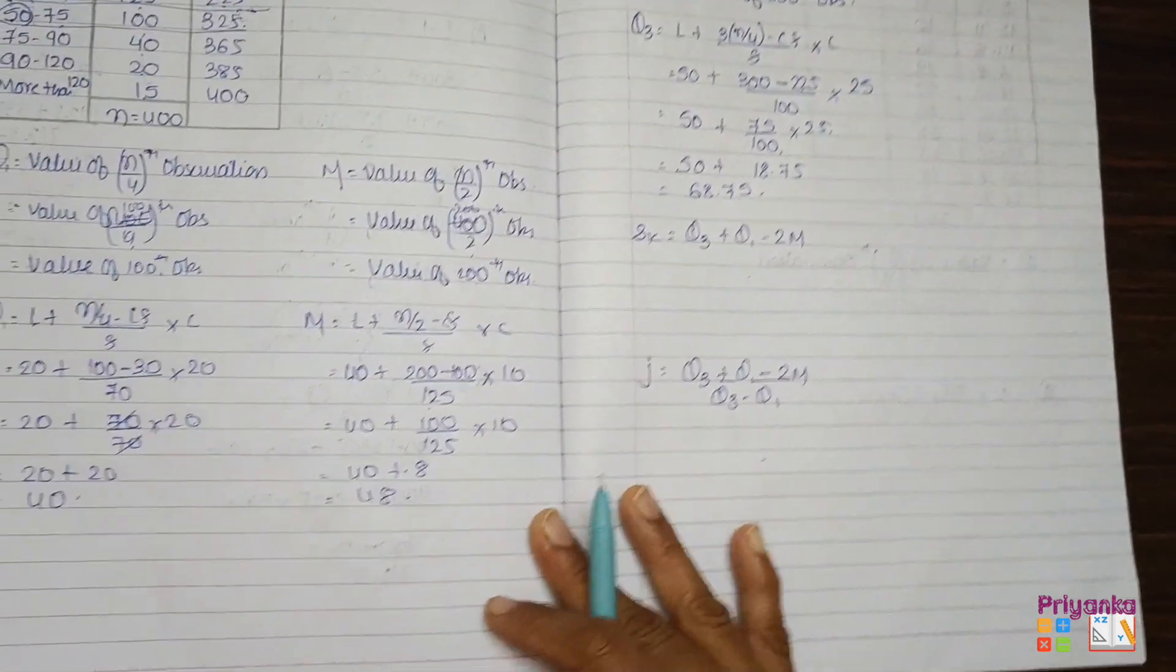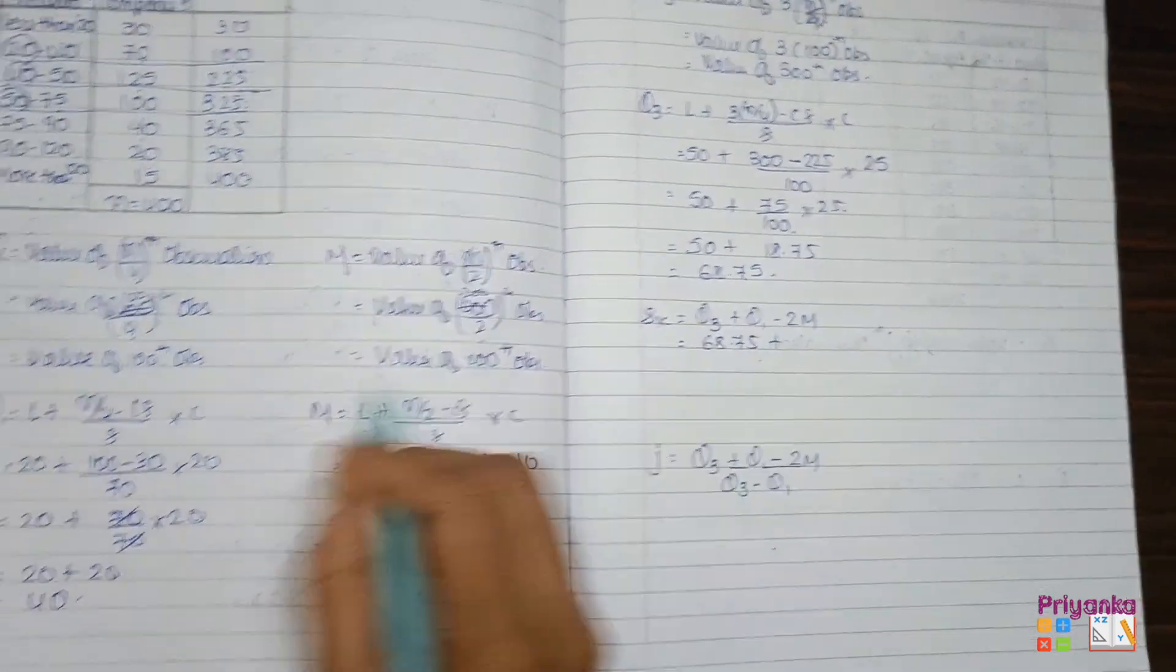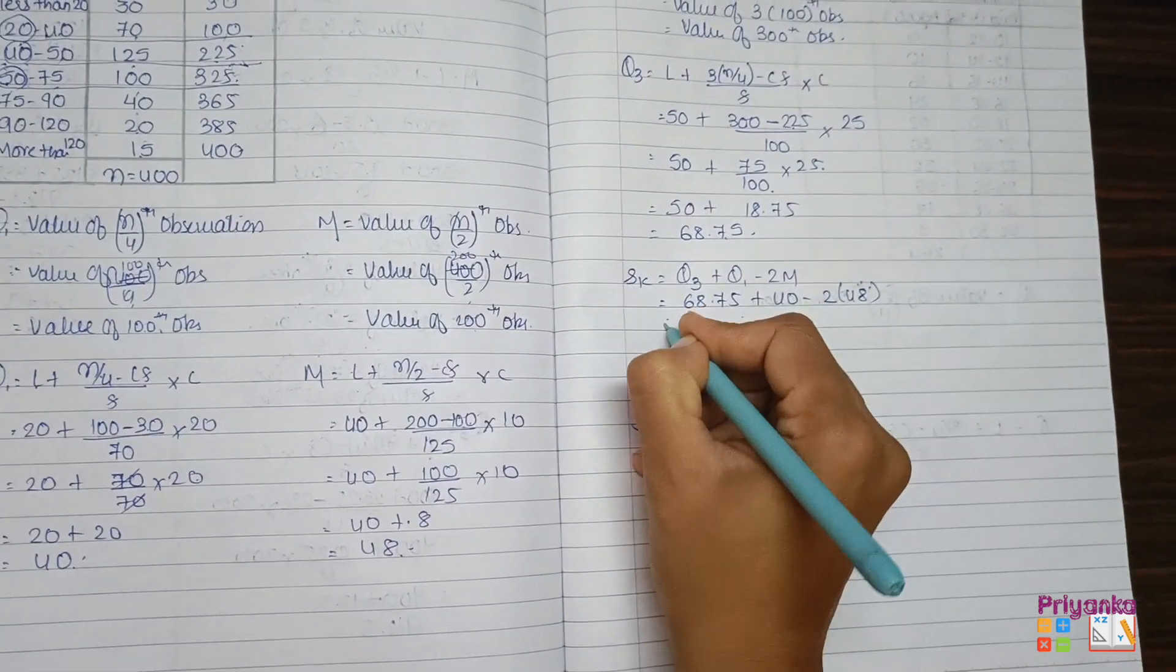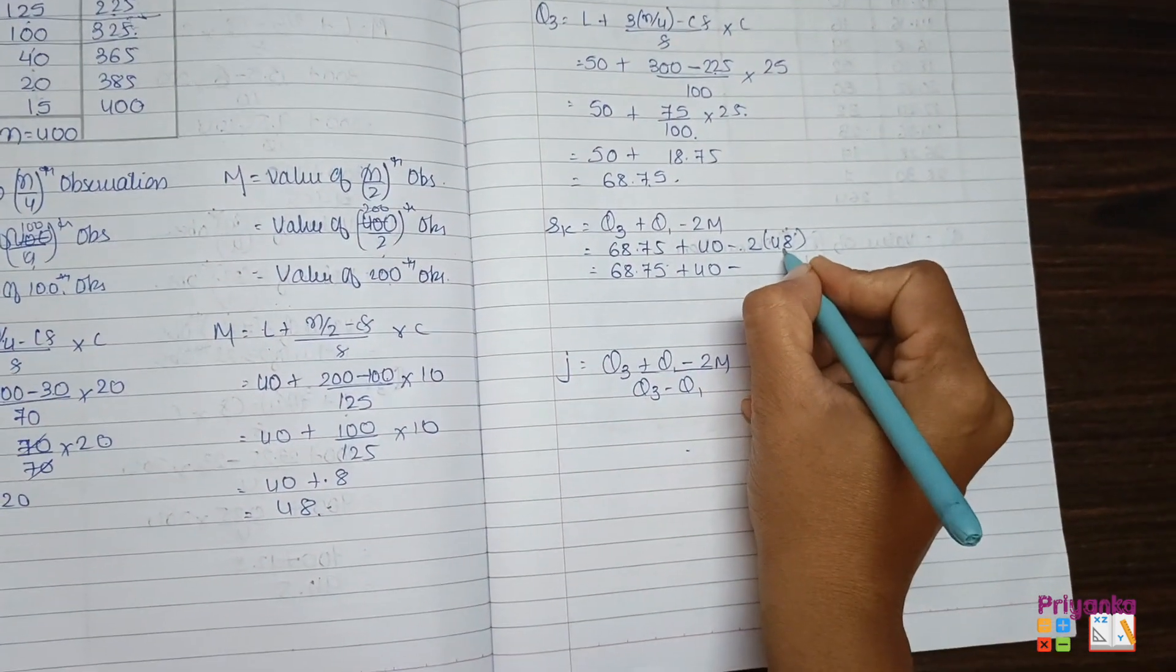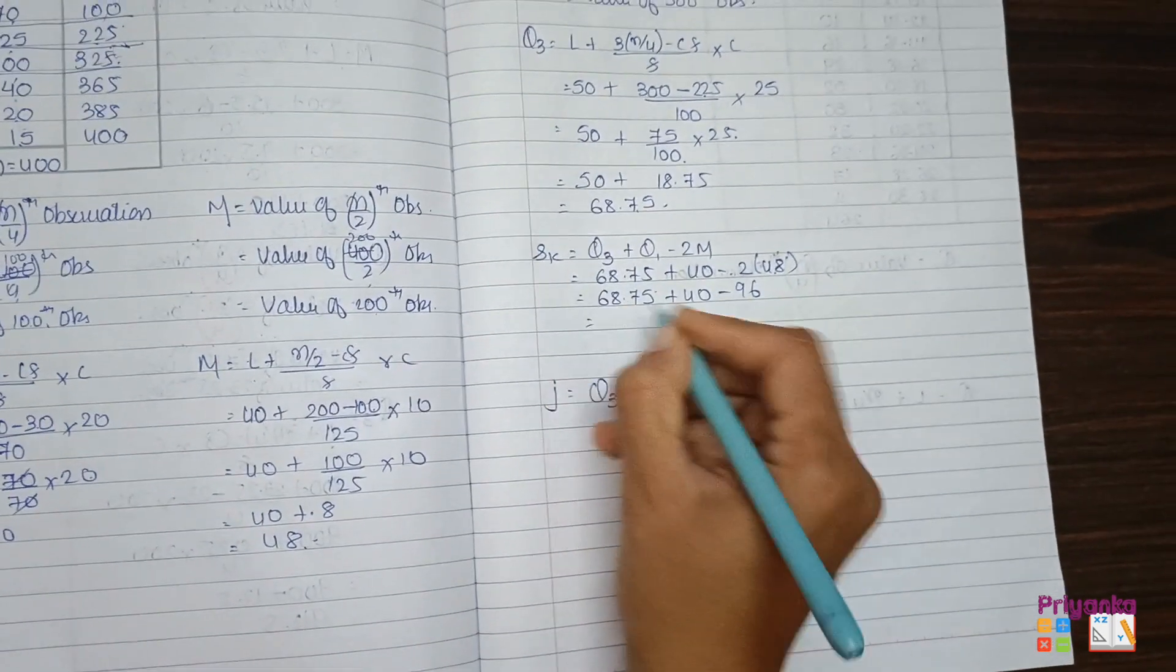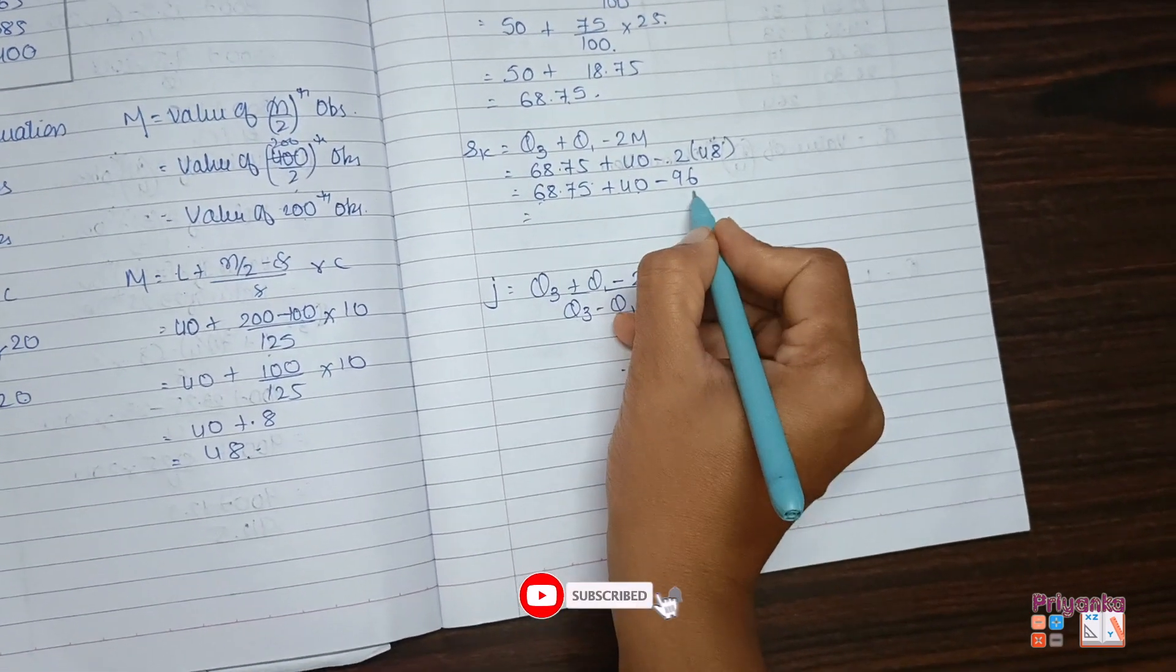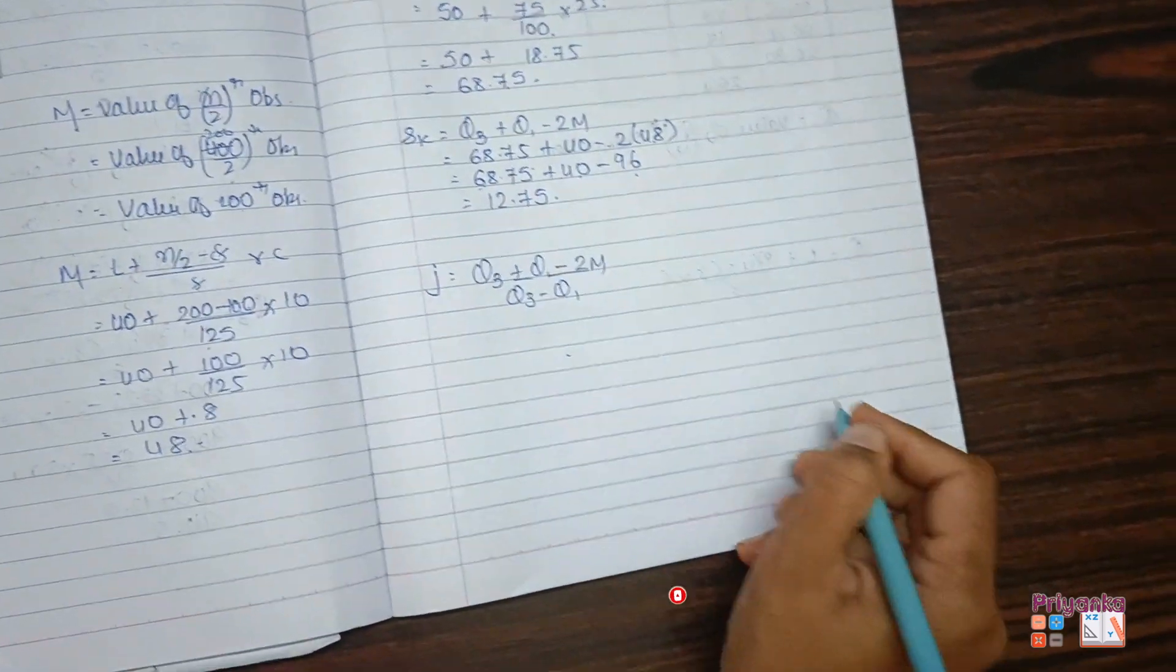Just add them, will be 68.75. So here we find out Q3. So at the end we are just going to find out skewness and coefficient of skewness. Q3, that is 68.75, plus Q1 will be 40, minus 2 median, which is 48.